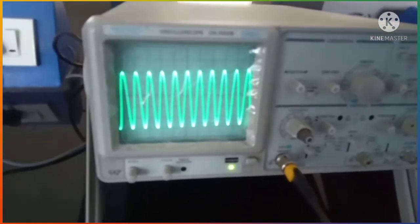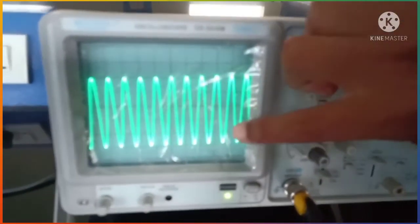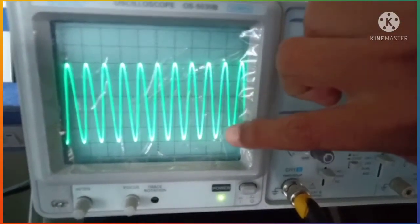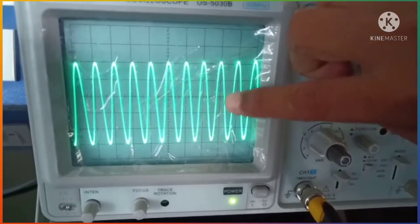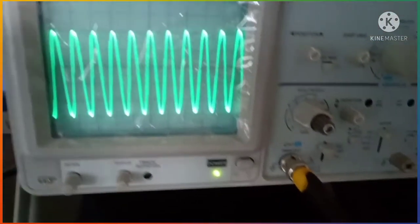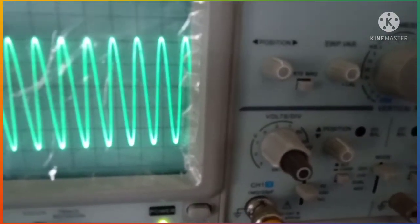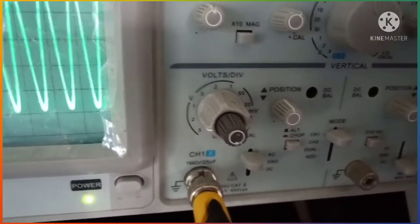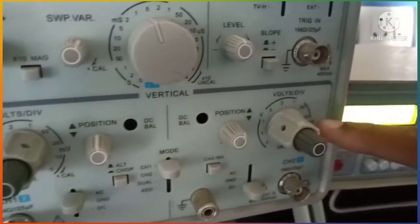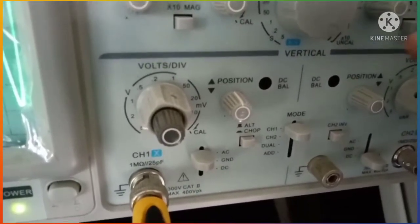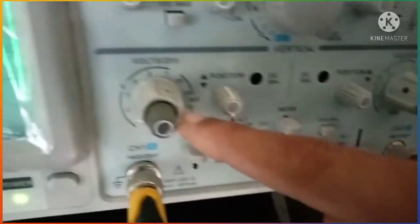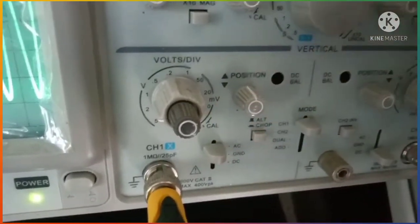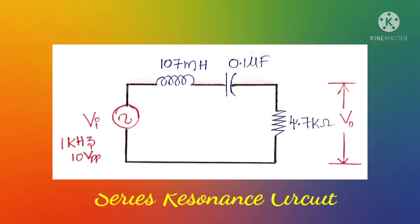After connecting the function generator to the CRO, we can visualize the waveform. We are setting 10 volts peak to peak — the waveform occupies five vertical divisions. This CRO has two channels; I connected the function generator to channel one. With volts per division set to 2, the applied voltage is 10 volts. Now let us see the series resonance circuit.